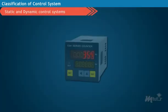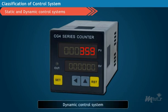A best example for dynamic control system is a counter, where the count displayed is based on the previous input to the counter.